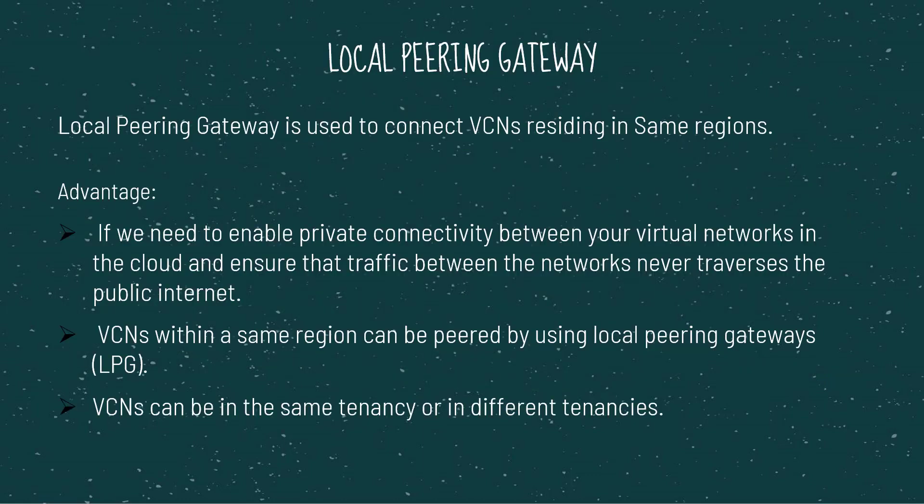What is the Local Peering Gateway? The Local Peering Gateway is used to connect two VCNs residing in the same region. The advantage of Local Peering Gateway is that the connectivity is done between the private network and it doesn't need to go via internet connectivity. That's the main advantage. The VCNs within the same region can be peered using Local Peering Gateway, and the VCNs can reside in the same tenancy or in a different tenancy, but the region should be the same.